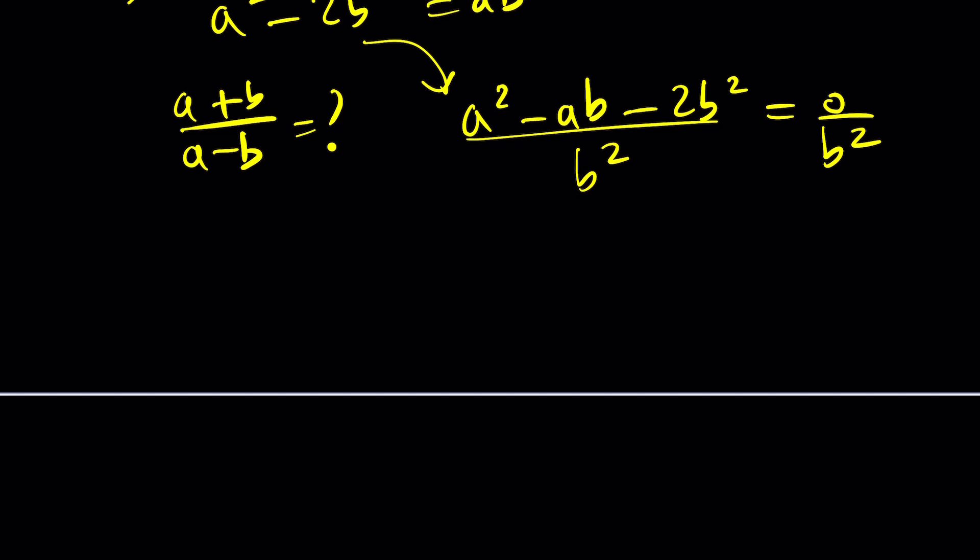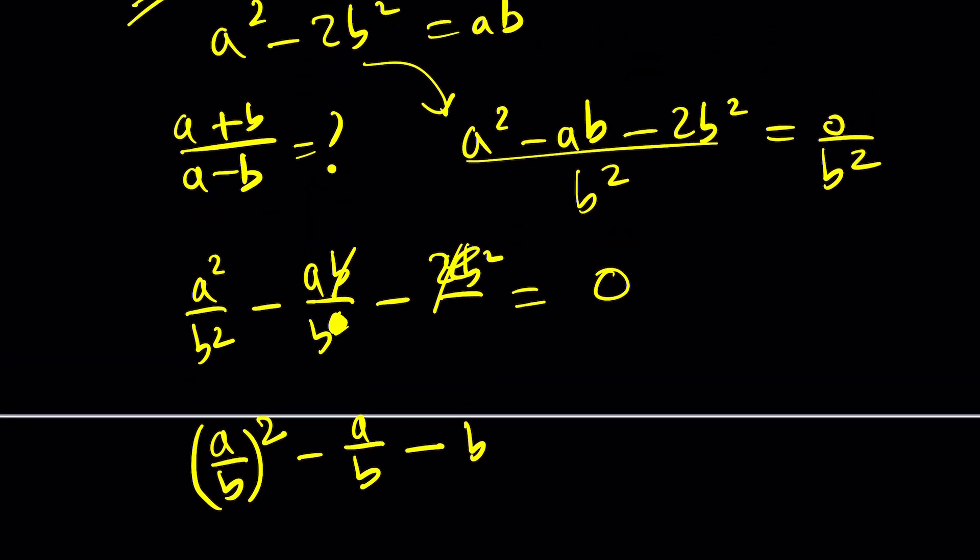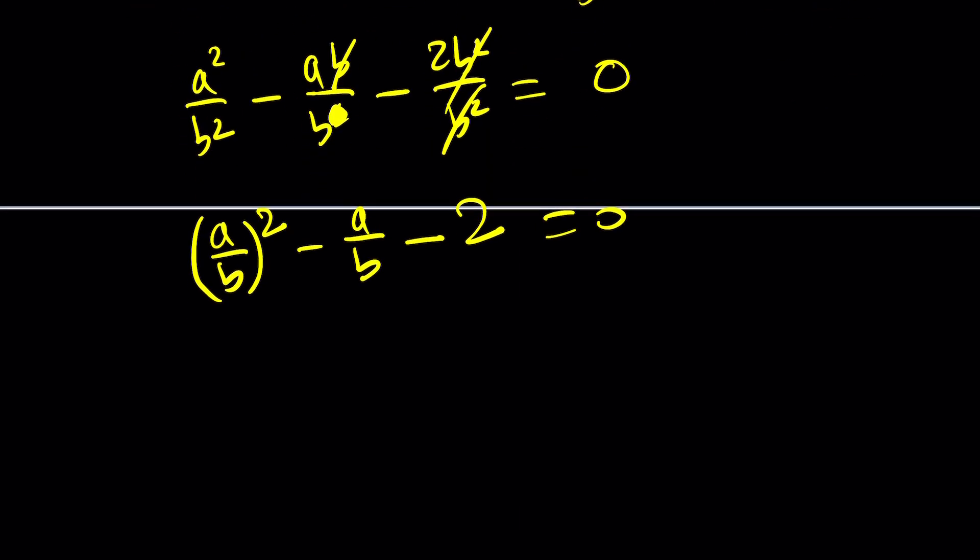Now I'm going to write it like this: a²/b² - ab/b² - 2. So I'm just going to separate these things. And of course, that is equal to 0. Now a²/b² is (a/b)². Here b, one of the b's cancel out, leaving us with -a/b, and then -2, which is a constant term. Since we want to know what a/b is, let's go ahead and set it equal to something. How about a/b equal to r for ratio?